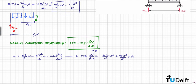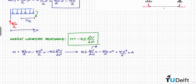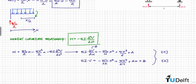We can integrate once more to obtain the deflection equation. This gives us one equation for the slope and one equation for the deflection. We now need to determine the constants of integration using boundary conditions.